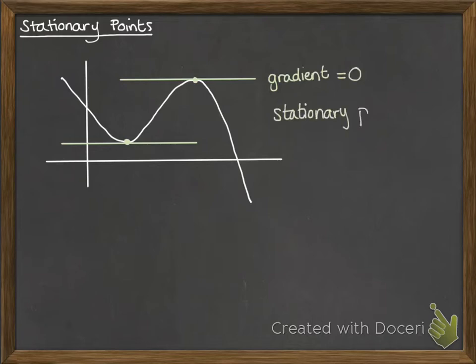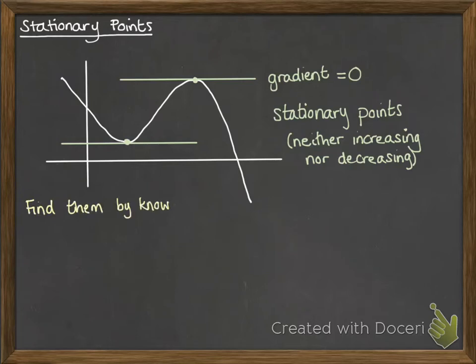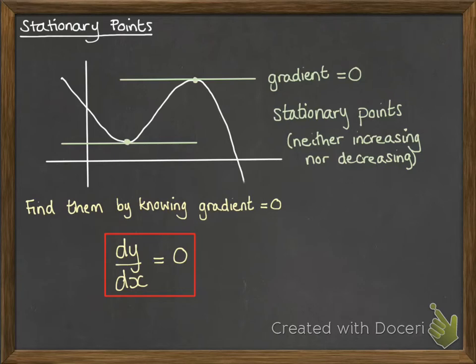So stationary points have that property where they're neither increasing nor decreasing and to find them we know that the gradient is zero. So we can work out dy by dx equals zero to find where those stationary points are.